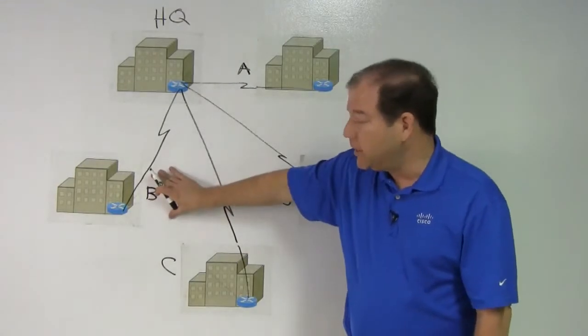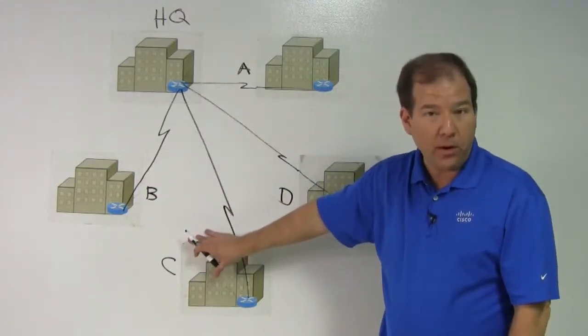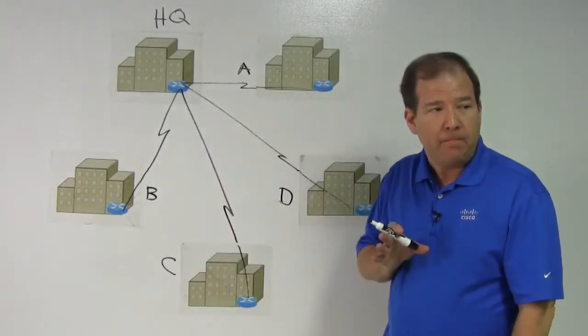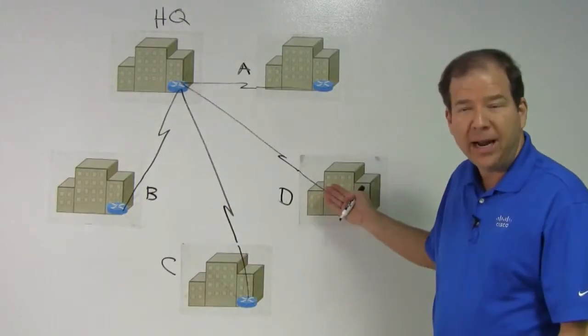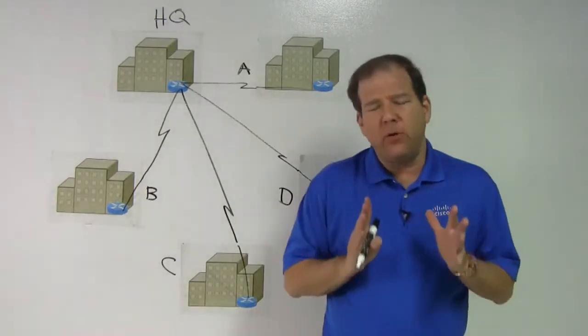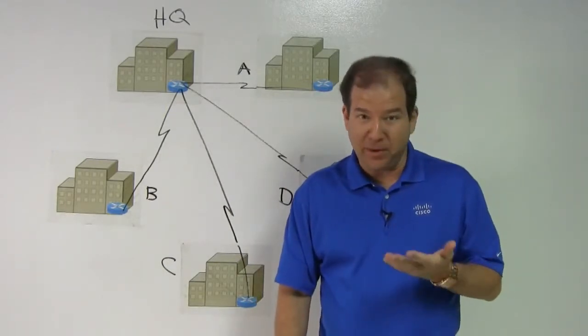Let's say that B is human resources and C is payroll. They communicate frequently. Now, there's not much communication between HR and engineering, so they probably don't need a link. I don't think we need a full mesh. A full mesh gives us optimal pathing, but it can be expensive.